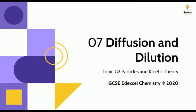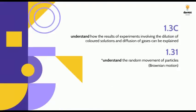Diffusion and dilution is another element of the chemistry course. I'll keep this concise because in another biology video we cover diffusion in detail. You need to understand how the results of experiments involving dilution of colored solutions can be explained, and you need to know what Brownian motion is.